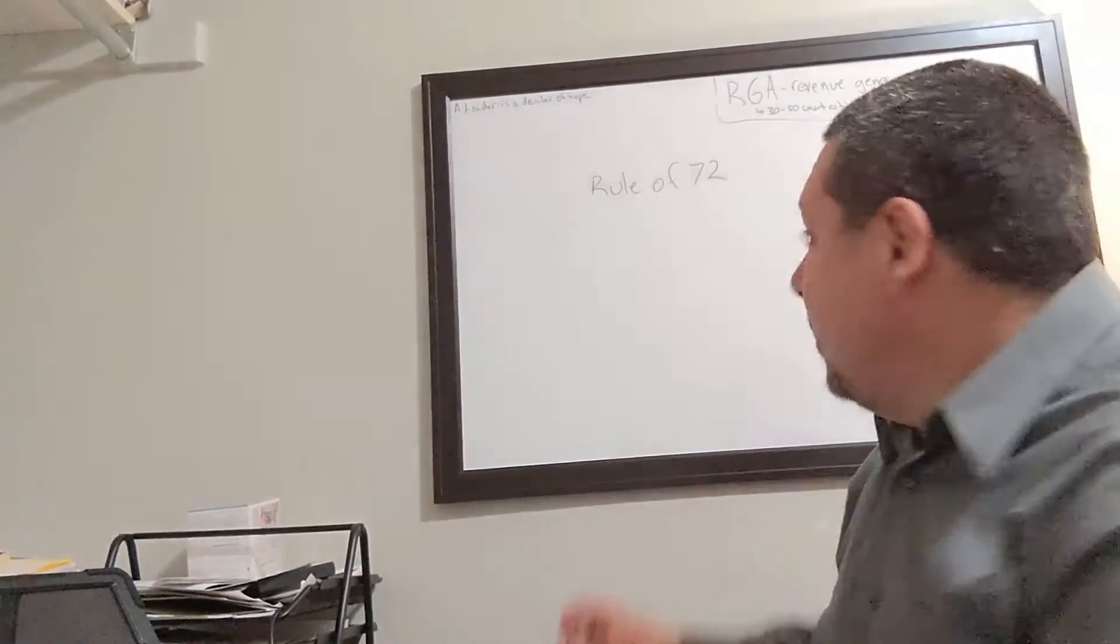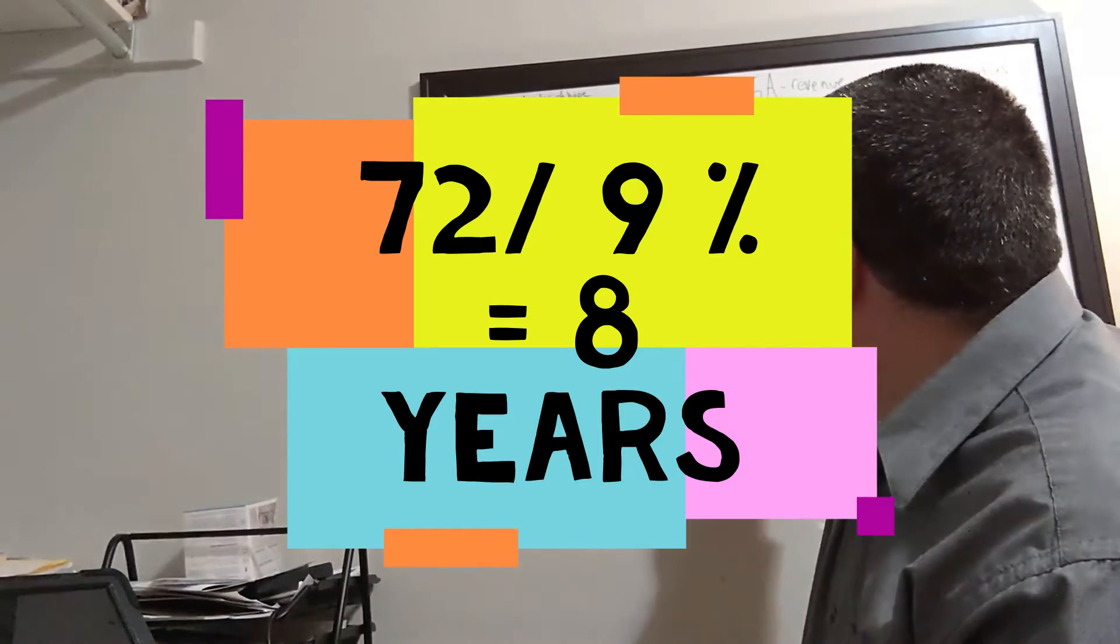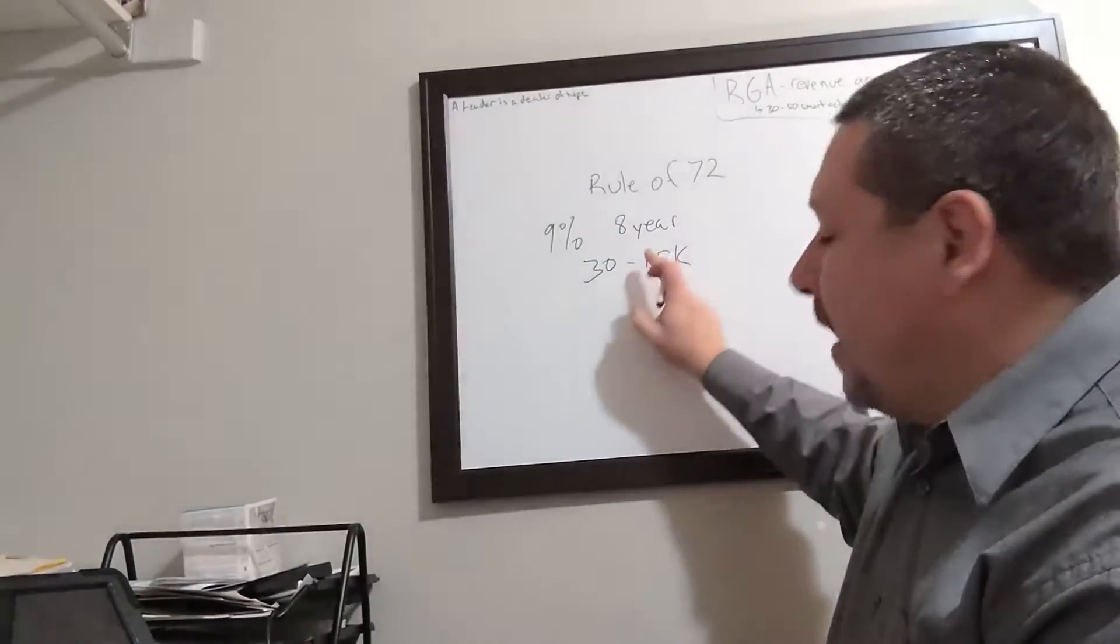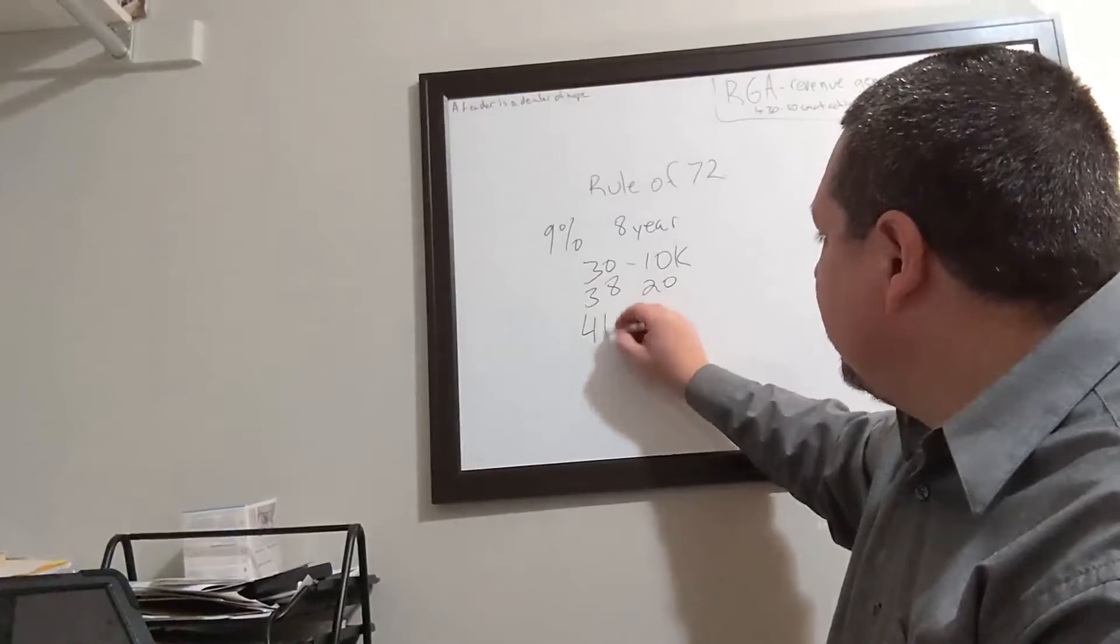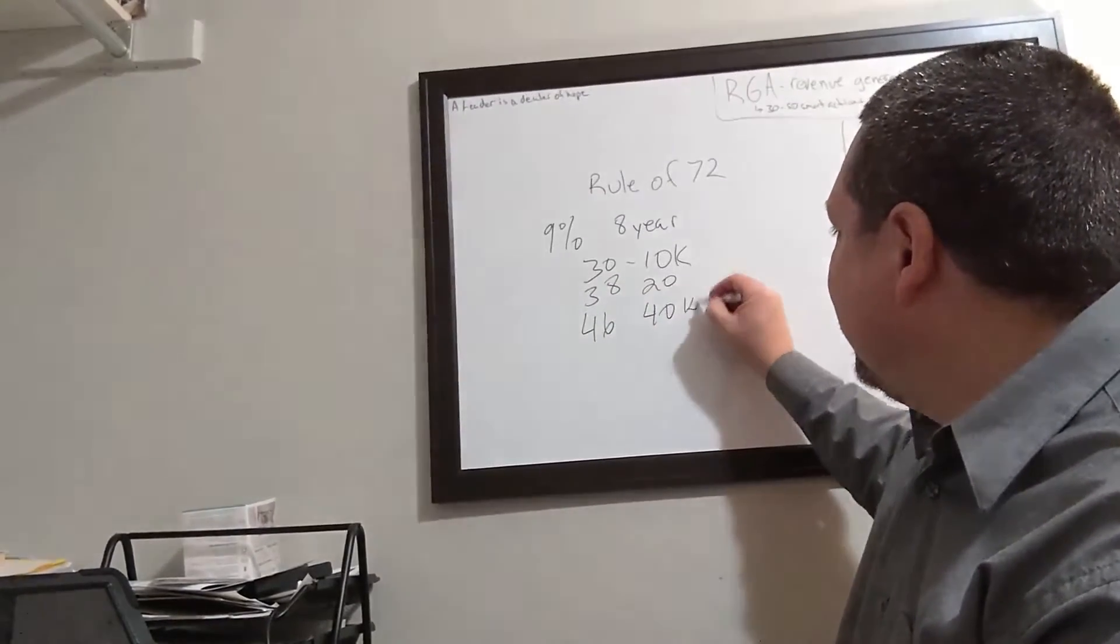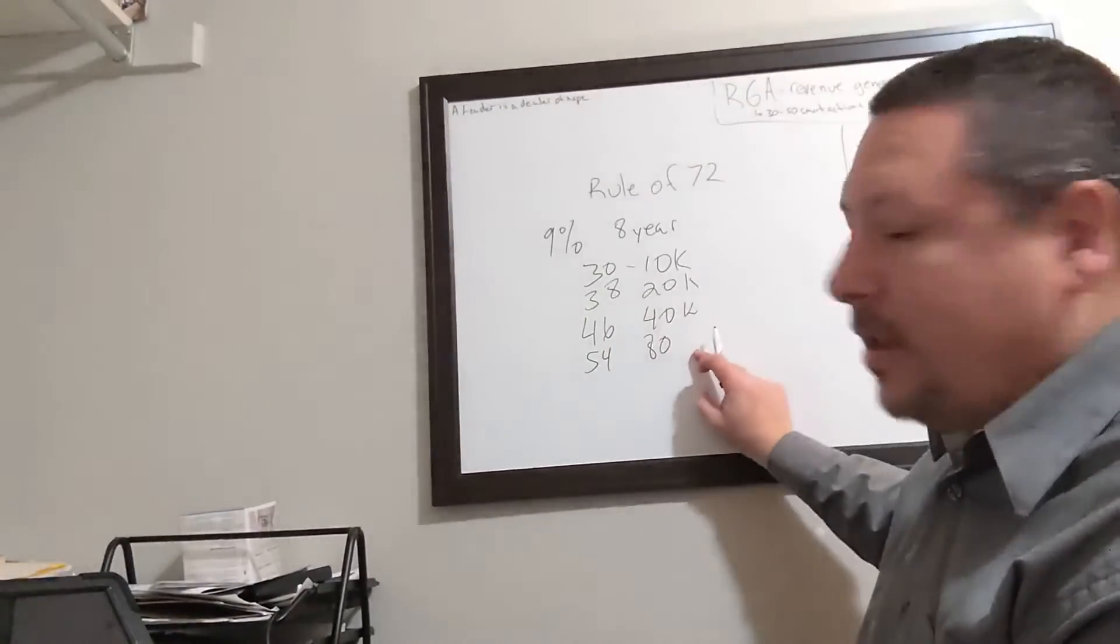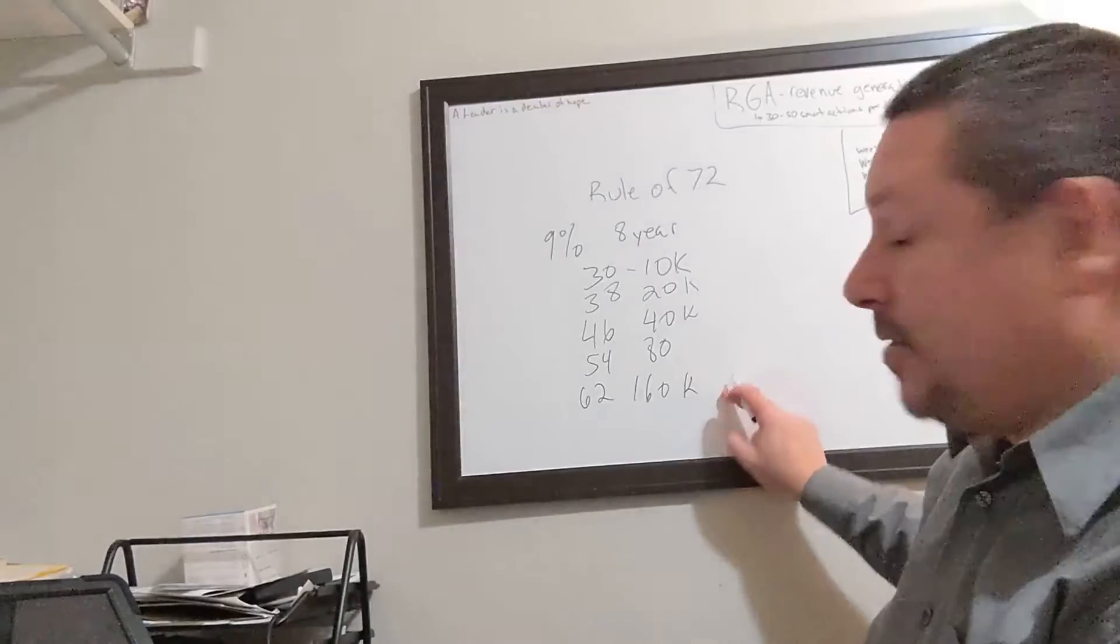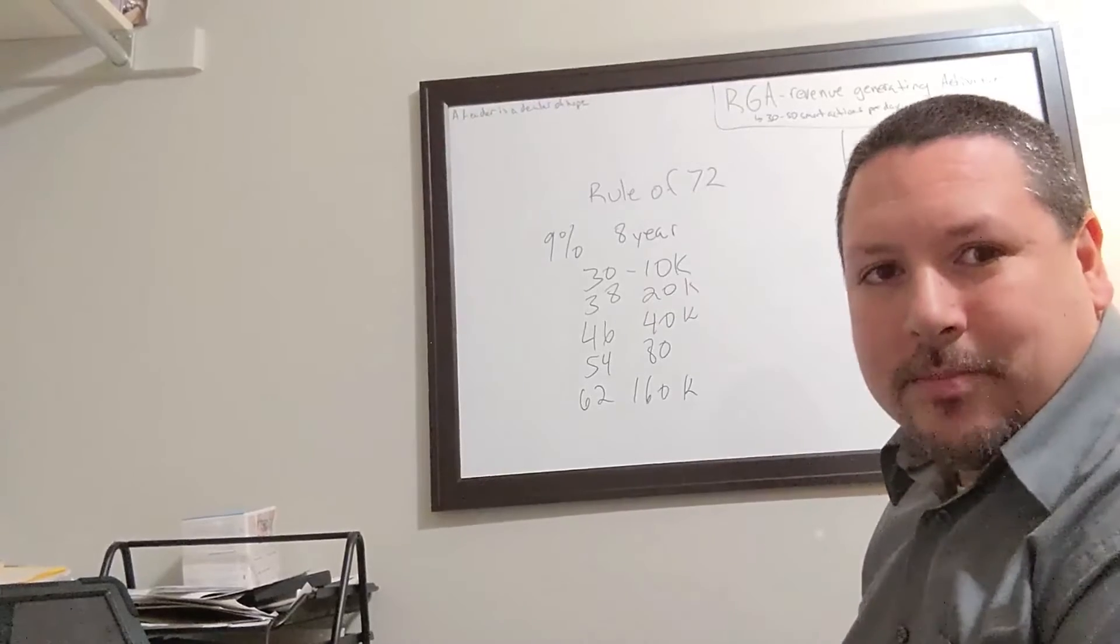Let's say you had 9%. 72 divided by 9 works out to 8 years. So at 30 years old with $10,000, at 38 you have $20,000, at 46 you have $40,000, at 54 you have $80,000, and at 62 you have $160,000. Again, notice the doubling factor that starts to happen near the end. This is the power of time and compound interest.